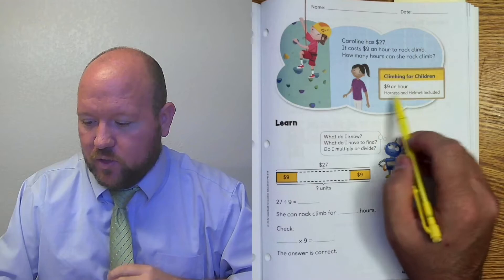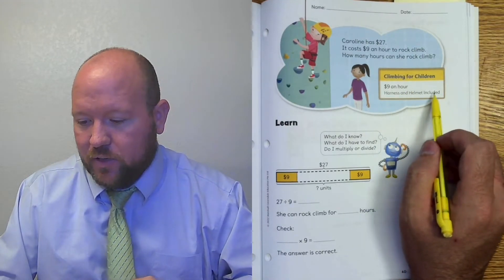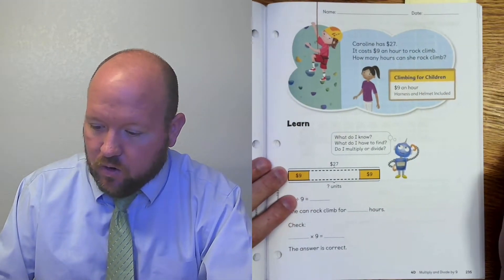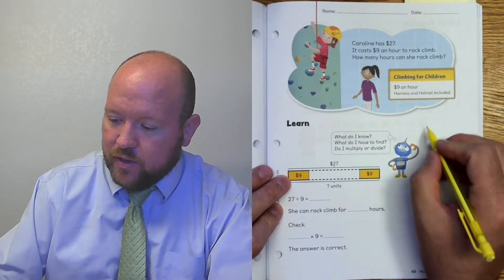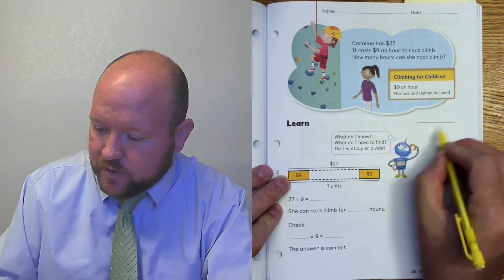Climbing her children, $9 an hour, harness and helmet included. Okay, good. So here they've drawn this model. This is the one I don't prefer. So let's go ahead and draw the model that I like because I think it's just a little bit more clear.